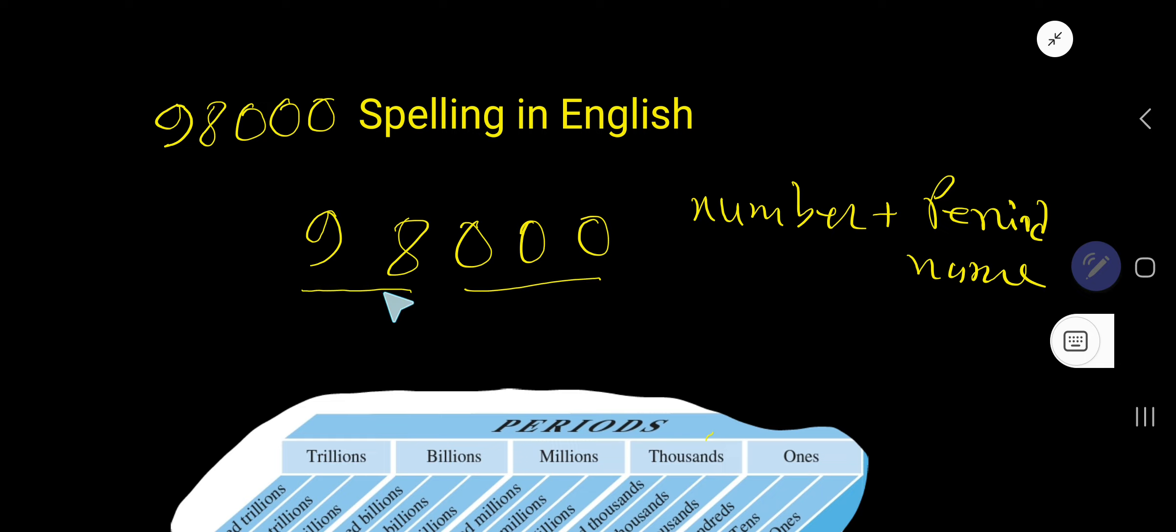So in thousands period we are getting the number 98. To spell this number, we have to bear in mind that we'll write the number in greatest period first. Here, thousands period number plus period name. Now in the greatest period, that is thousands period, we are getting the number 98.